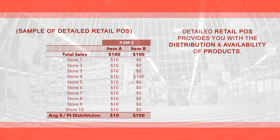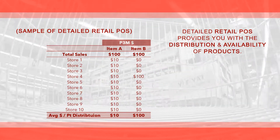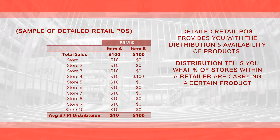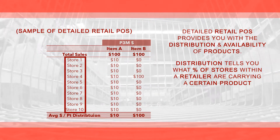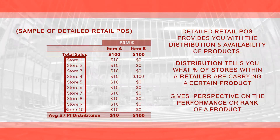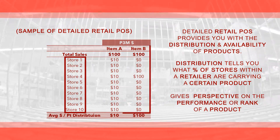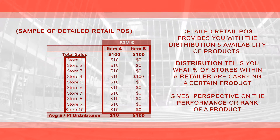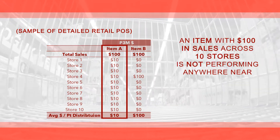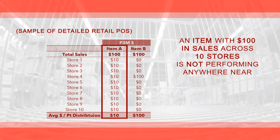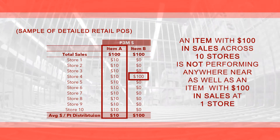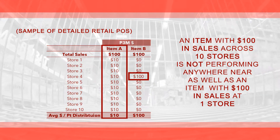Detailed Retail POS provides you with the distribution and availability of products. Distribution simply tells you what percentage of stores within a retailer are carrying a certain product, but that number provides valuable perspective on the performance or rank of a product at a cluster or market level. An item with $100 in sales across 10 stores is not performing anywhere near as well as an item with $100 in sales at one store.